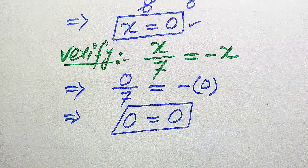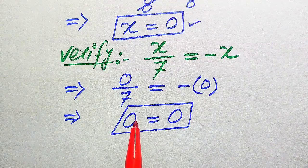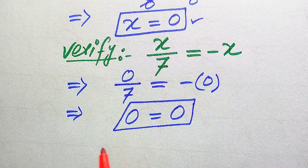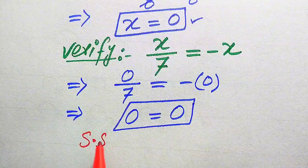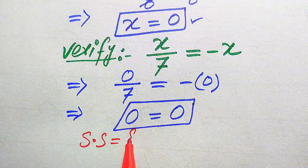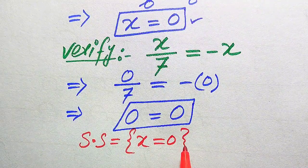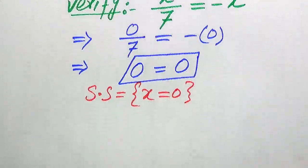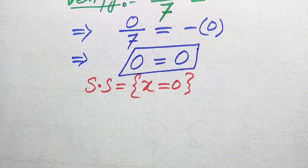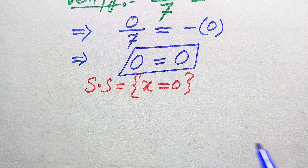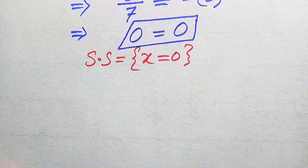Since x equals 0 satisfies the given equation and there is no other value of x, the solution set of this question is x equals 0 only. This is the final answer from Method 1.